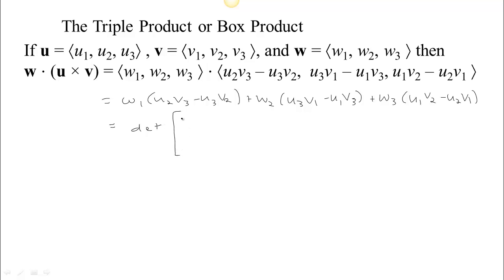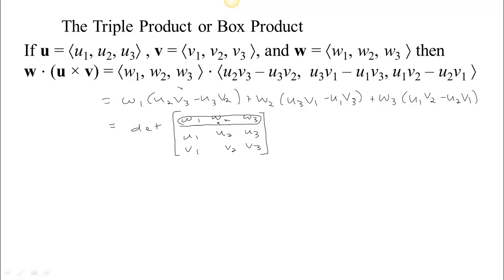That's the determinant of this matrix: we have w1, w2, w3, and u1, u2, u3, and v1, v2, v3. If you take that determinant, these are exactly the entries you're going to get. If you do this determinant expanding along the top row, you'll have w1 times (u2·v3 minus u3·v2) — check. You'll have negative w2, because of the checkerboard pattern this is in a negative position, so negative w2 times (u1·v3 minus u3·v1), which is just right — if you distribute the negative, that's what you get. And then the last term, w3 times (u1·v2 minus u2·v1). So that really is a determinant.